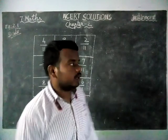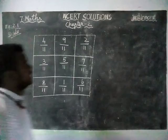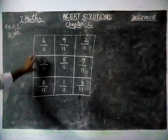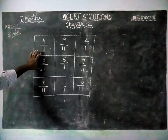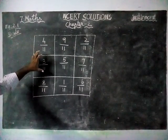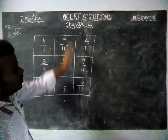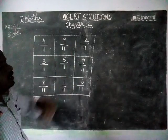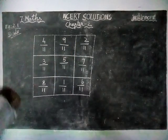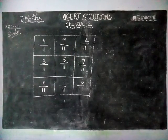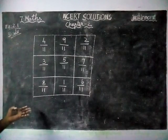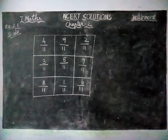Here they have given a square with like fractions. With this we are going to find whether all the rows, all the columns and diagonals are equal. If all the rows, columns and diagonals sum is equal, it is called a magic square.